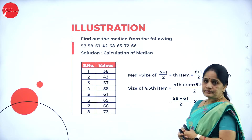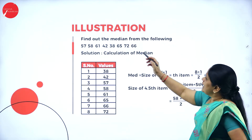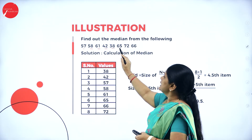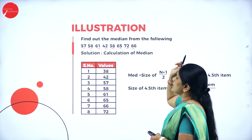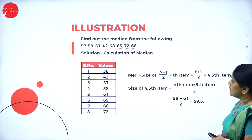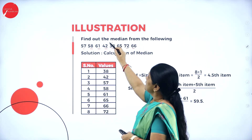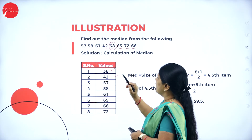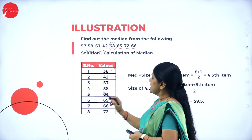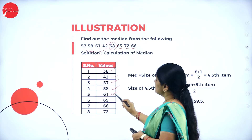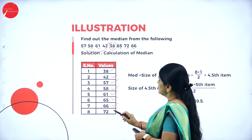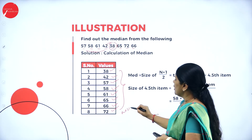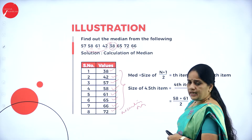In the next problem, find the median from the following values: 57, 58, 61, 42, 38, 65, 72, 66. Arranging in ascending order: 38, 42, 57, 58, 61, 65, 66, 72. Now applying the formula: Median = size of (n+1)/2 th item. There are 8 values, so n equals 8. Substituting: (8+1)/2 = 9/2 = 4.5th item.